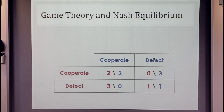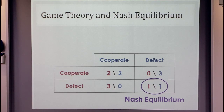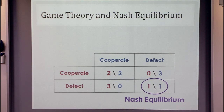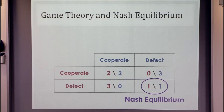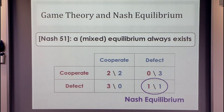A central notion in game theory is the notion of Nash equilibrium. A Nash equilibrium is just a set of strategies for the different players that are, in some sense, stable — meaning that starting from these strategies, no individual player has an incentive to change their strategy. Nash equilibrium is one of the most useful tools we have for predicting the behavior of rational players. A famous theorem by John Nash says that in every game, there is a set of perhaps probabilistic strategies that form an equilibrium.